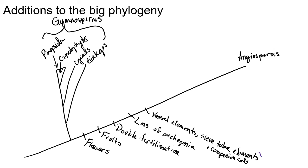Now, vessel elements, double fertilization, and fruit and flower-like structures evolved convergently in Gnetophytes. These are the reasons why we thought Gnetophytes were maybe a sister group to the angiosperms. However, it's all convergent. Their vessel elements, their method of double fertilization, and the fruit and flower-like structures they make are all just suited to their particular situation — the same way it was for the angiosperms. The environment selected for those traits in both groups separately. We'll see many examples of convergent evolution within angiosperms, because there was strong selective pressure on all of these groups as they evolved.